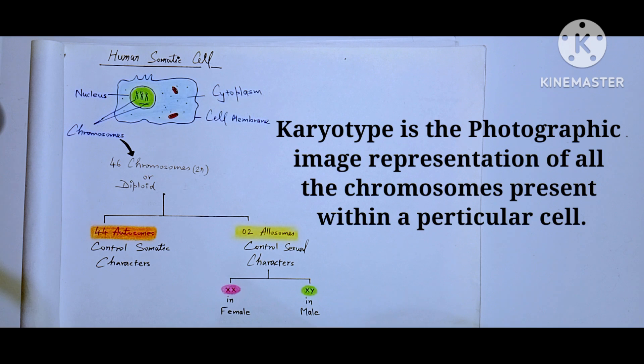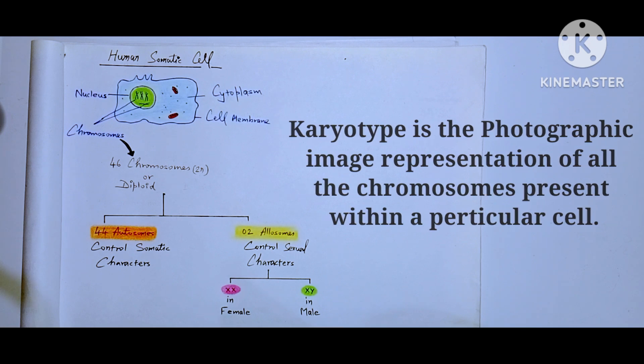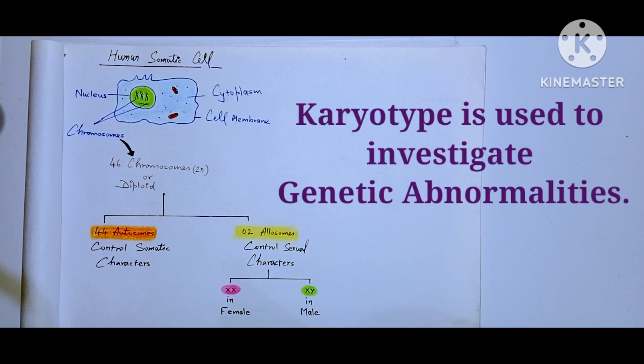All the chromosomes are arranged in homologous pairs in their order of decreasing length. A karyotype is used to investigate chromosomal aberrations or chromosomal abnormalities.